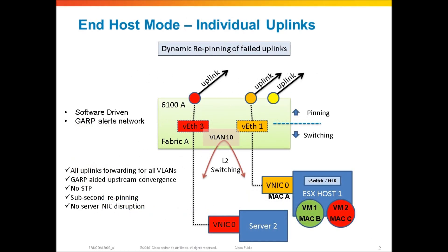If you attach the Fabric Interconnect to the upstream LAN in end-host mode with individual uplinks, let's take a look at an example of how traffic flows and some link failure scenarios. I've got my Fabric Interconnect A, the 6100A, and I've got three individual uplinks — three physical interfaces that are also three discrete logical interfaces, meaning I haven't bundled any of these links together in a port channel. So the Fabric Interconnect really sees three available links for pinning.